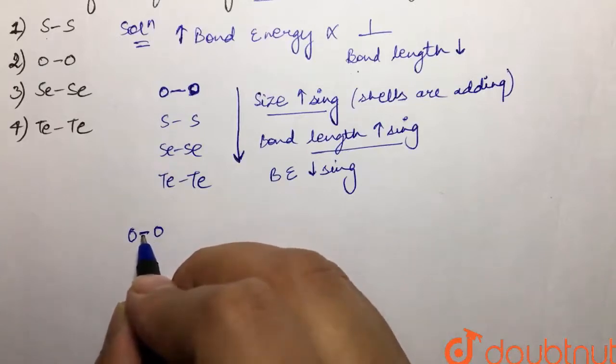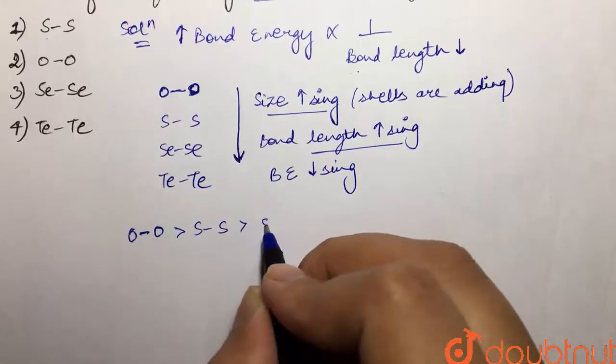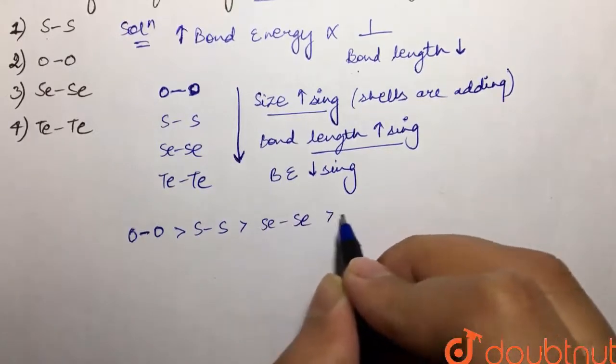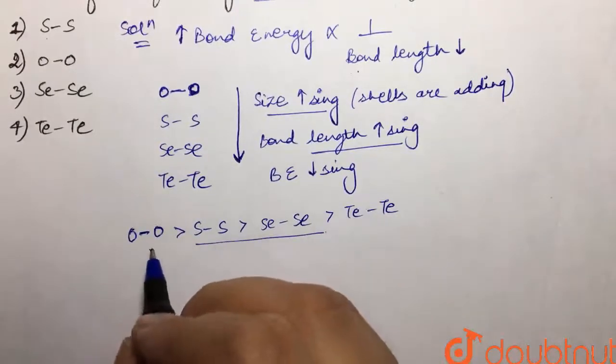Then sulfur, then selenium, and then tellurium. But this is not correct. Why? Because